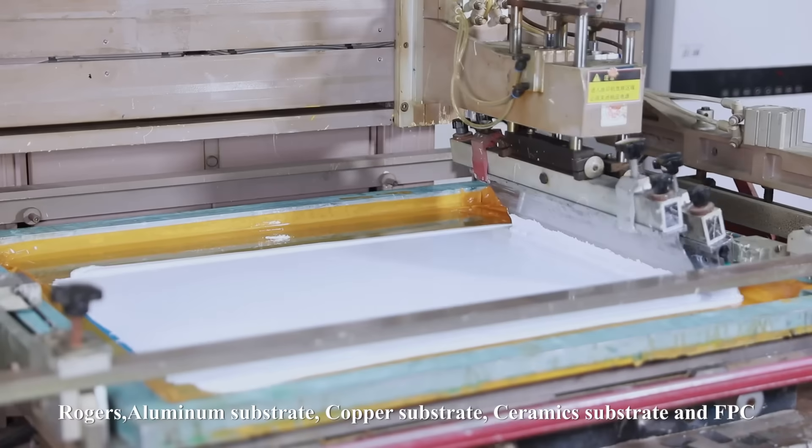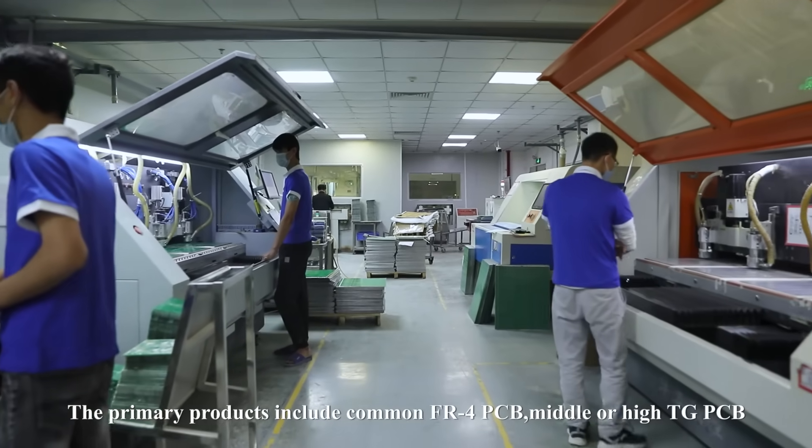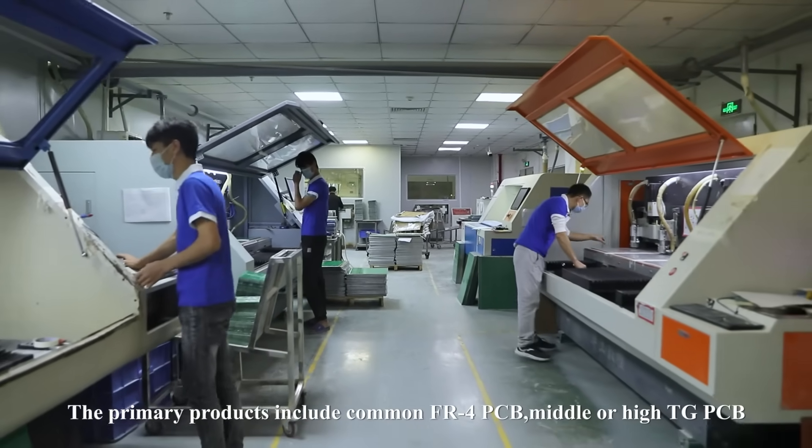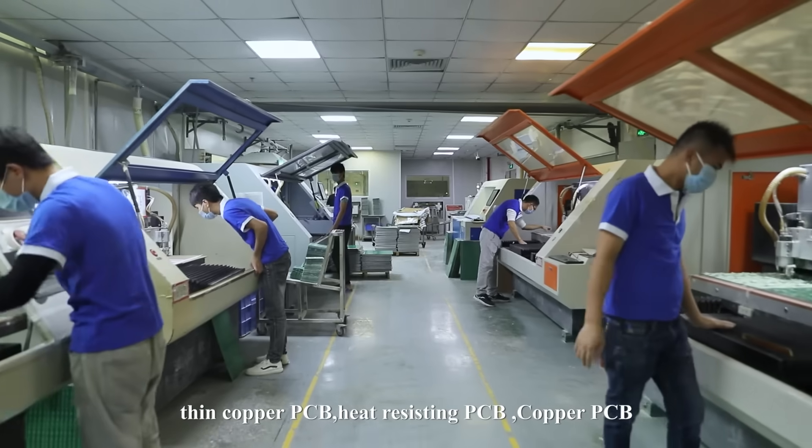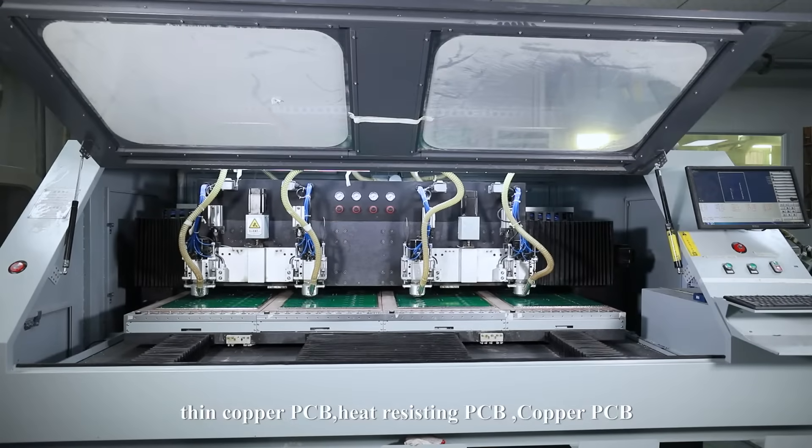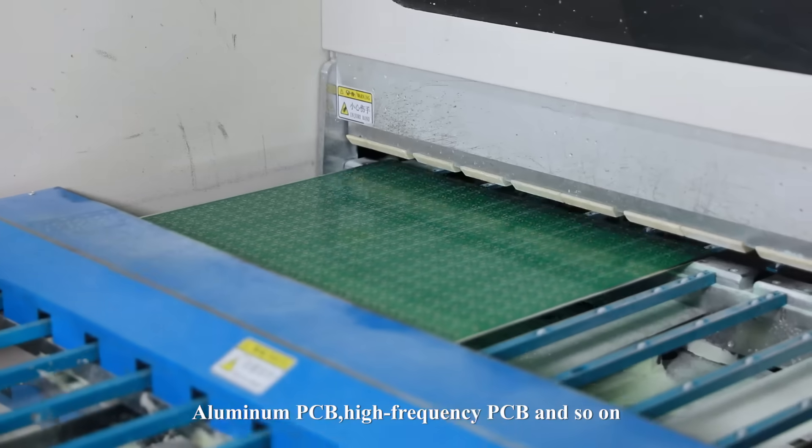Our primary products include common FR4 PCB, middle or high TG PCB, thin copper PCB, heat-resisting PCB, copper PCB, aluminum PCB, and high-frequency PCB.